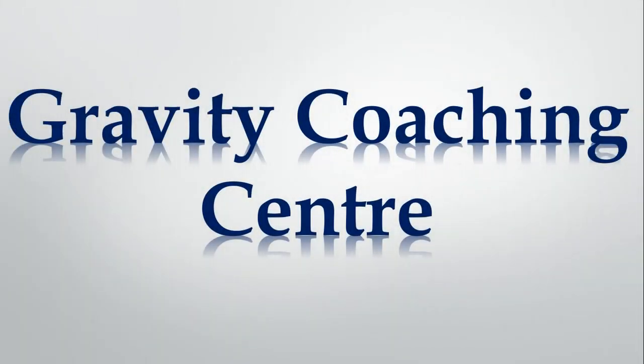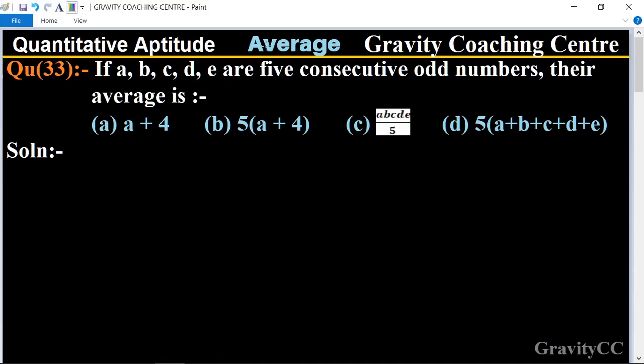Welcome to our channel Gravity Coaching Centre. Quantitative Aptitude, Chapter Average, Question Number 33. If a, b, c, d, e are five consecutive odd numbers and their average is which option?